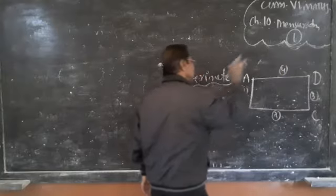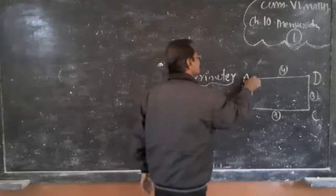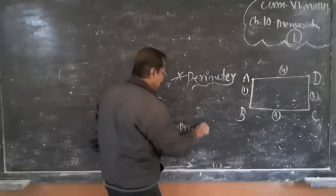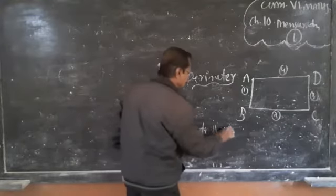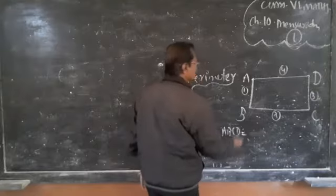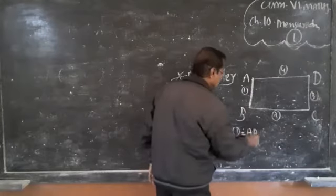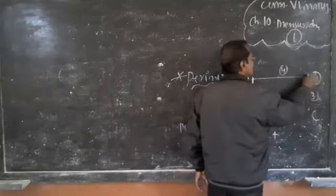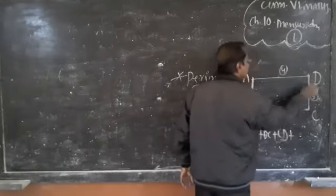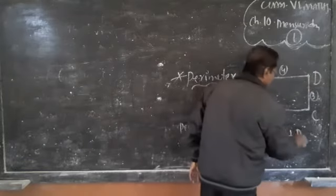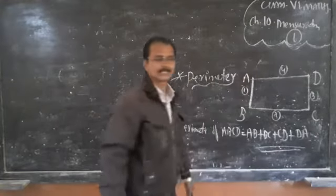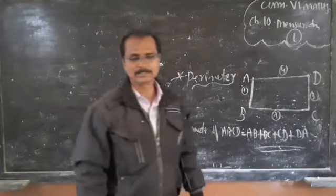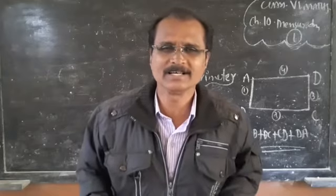So the perimeter of the rectangle is A,B plus B,C plus C,D plus D,A. That is the perimeter of the rectangle.